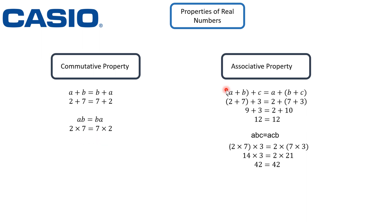For associative property: when adding three terms, the order of parentheses doesn't matter. For example, (a plus b) plus c is the same as a plus (b plus c). With numbers: (two plus seven) plus three equals two plus (seven plus three), and both sides give 12. This rule also applies in multiplication: (a times b) times c equals a times (b times c). For example, (two times seven) times three equals two times (seven times three), and both sides give 42.